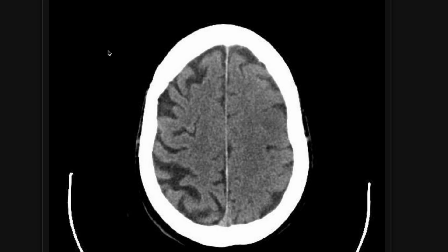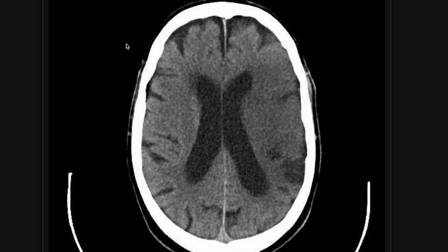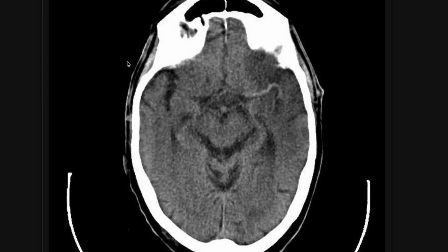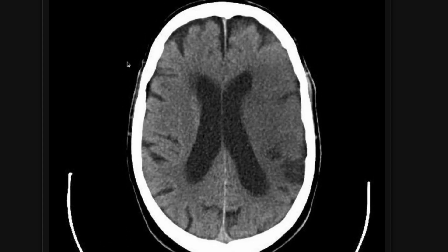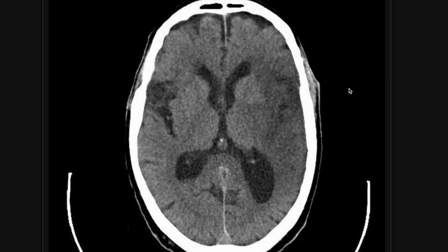For this first case, it's a patient with acute right-sided weakness. When you hear right-sided weakness, you think left side of the brain. As I scroll through the brain, something may be catching your eye. I want you to pay attention to this segment of brain and compare it to the alternate side. Notice how it's uniformly dark and you can't really see the cortex compared to the subcortical white matter.